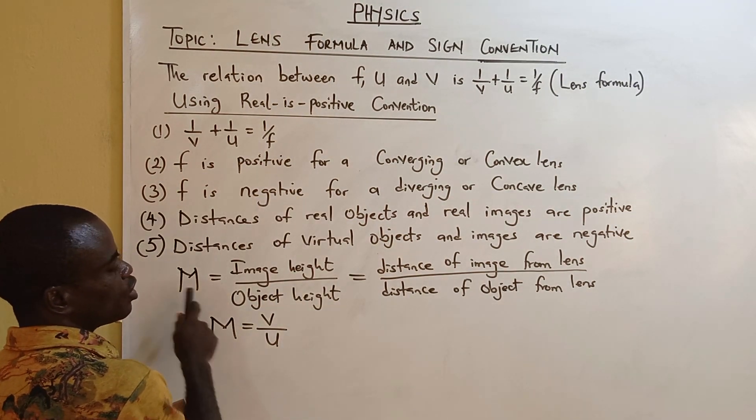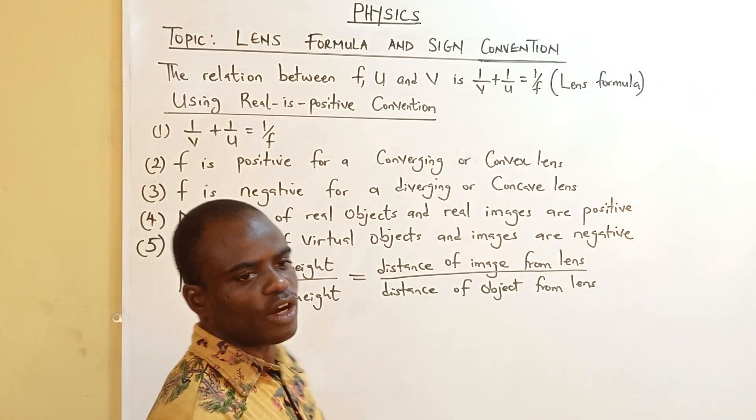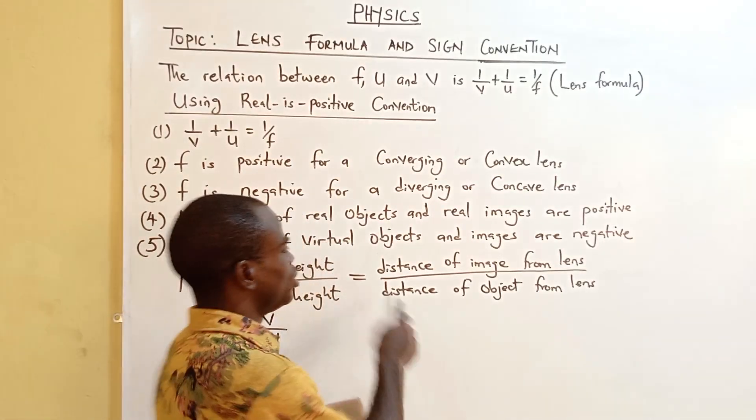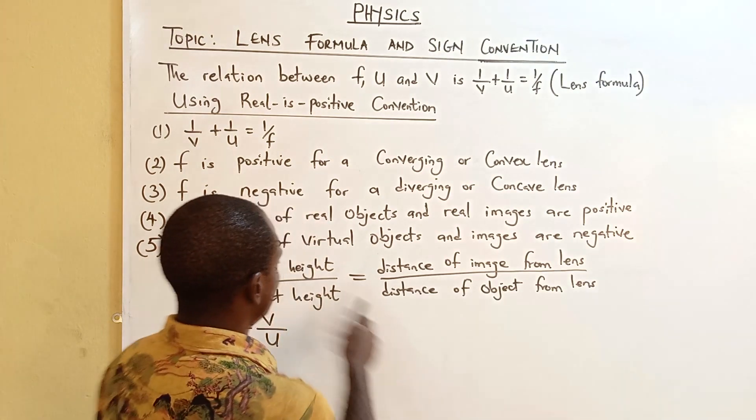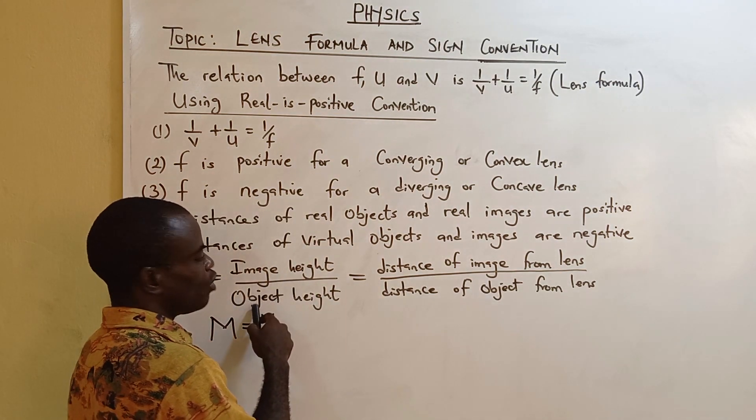m, which is magnification, equals image height over object height equals distance of image from lens over distance of object from lens. Take note that image comes before object.